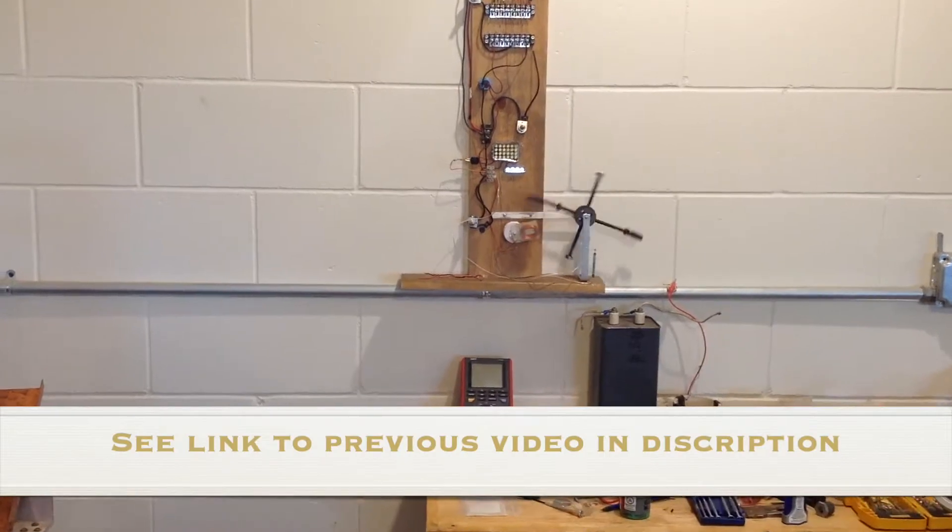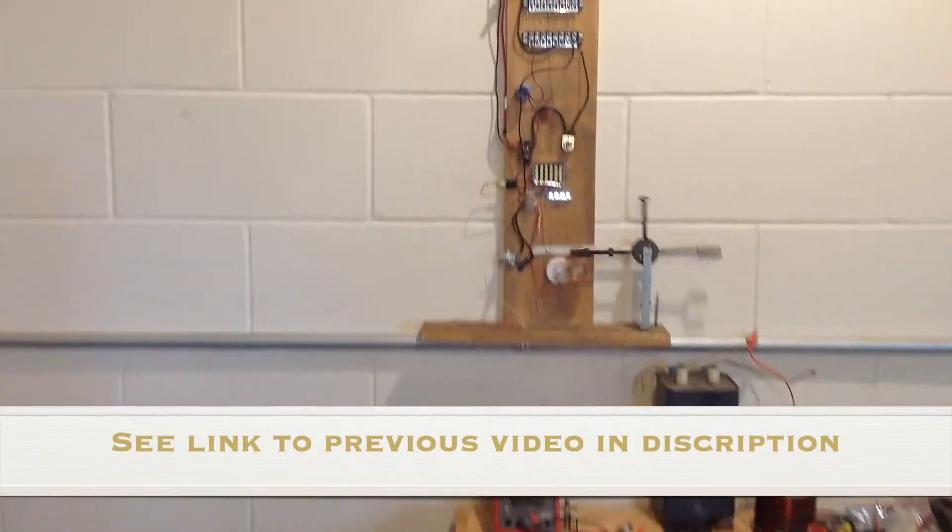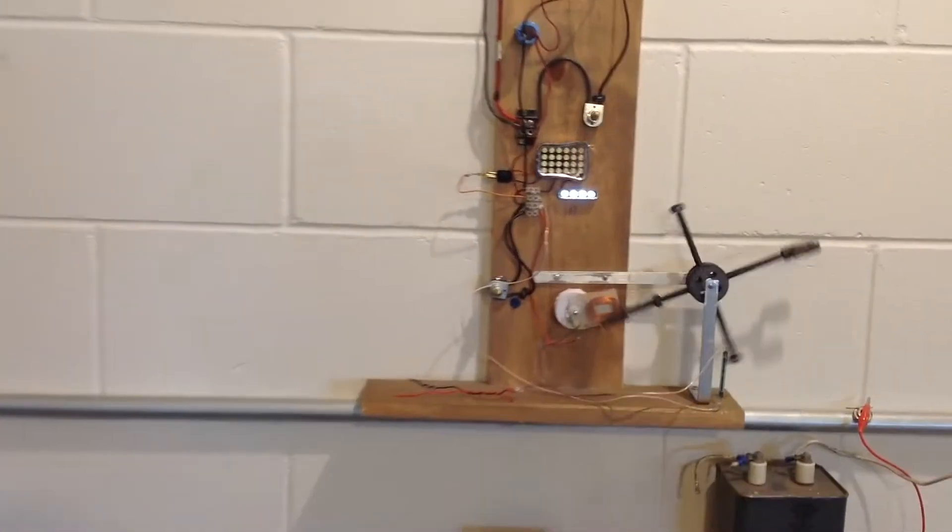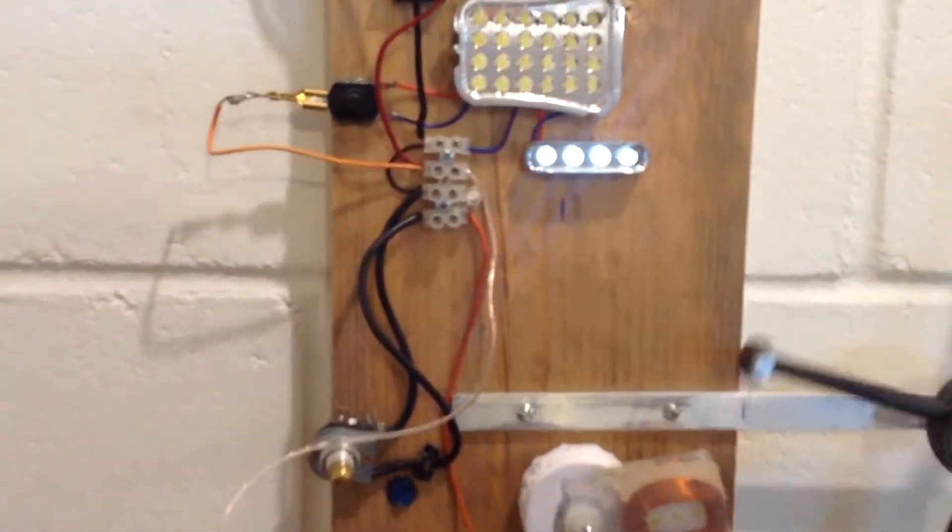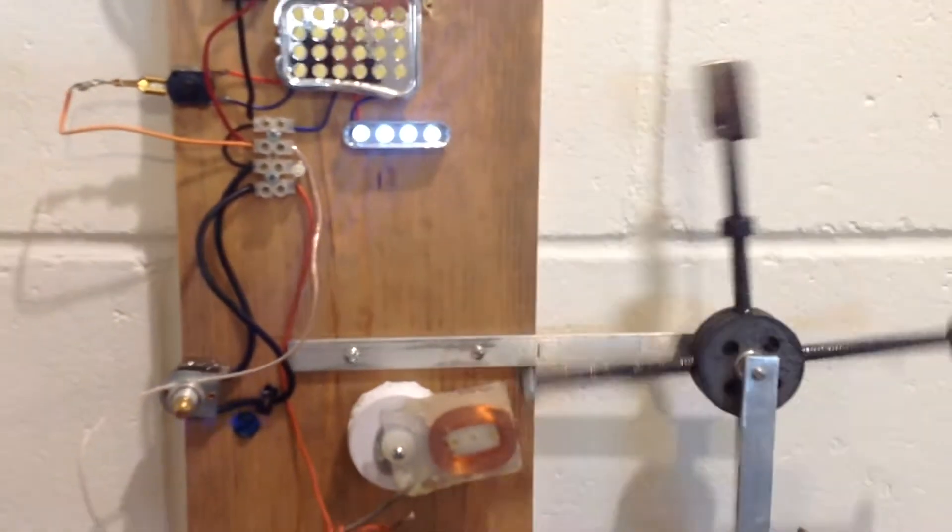In my previous video I was showing how I could light LEDs and charge capacitors up to different voltages with my antenna power circuit. Now I added another circuit and this is for a pulse motor.